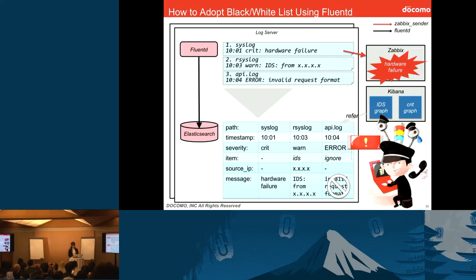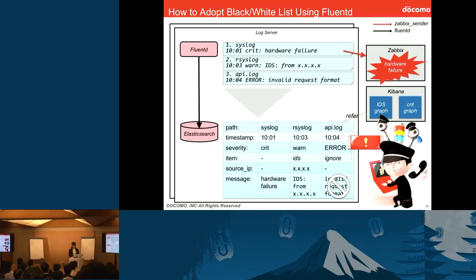Here are simplified examples. The first example indicates a hardware failure — this message is in our blacklist, so FluentD sends this log to Zabbix, and an alert will tell us the failure immediately. The second example is an IDS log — FluentD extracts the source IP from the message and inserts an IDS value to the item key, and Kibana makes graphs from this metadata. The third example indicates a user's operation error. Since this error doesn't impact our system, we have added it to the whitelist — FluentD inserts an ignore value to the item key, and Kibana filters out this log.